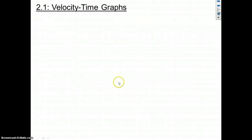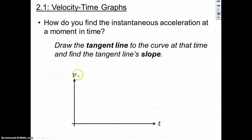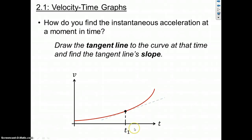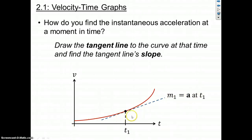The slope of an XT graph gives us velocity, and the slope of a VT graph gives us acceleration. So if you have some upward bending curve and want to find the instantaneous acceleration at T1, you find the slope at T1. You draw your tangent and find the slope. The slope of the tangent gives us the acceleration at that time T1.